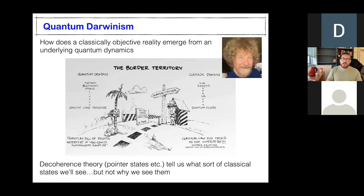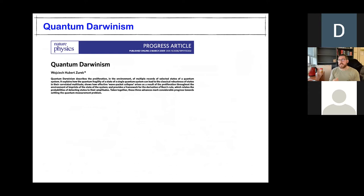While decoherence theory gives us a good description of how a quantum system loses its quantum properties, what Darwinism tries to get at is: if there is no strict boundary for where to draw the line between quantum and classical systems, I should have classicality emerging from the basic rules of quantum mechanics. That's really where Darwinism comes in. I recommend you look at this progress article from Wojciech, which is a perfect introduction to everything to do with Darwinism.